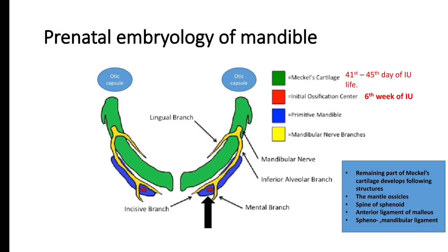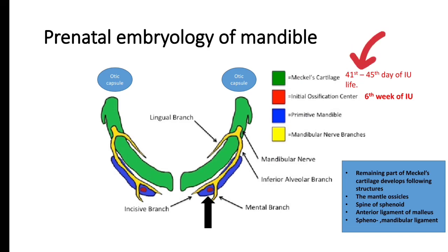The green portion is Meckel's cartilage, which has a vital role in the development of the mandible. Meckel's cartilage is like a money plant — just as a money plant needs some kind of support to grow, the mandible needs Meckel's cartilage to ossify; it acts as a guide and then soon disappears. The remnants of Meckel's cartilage are the mental ossicles — incus, malleus and stapes — the spine of the sphenoid, the anterior ligament of the malleus, and the sphenomandibular ligament. Meckel's cartilage appears on the 41st to 45th day of intrauterine life.